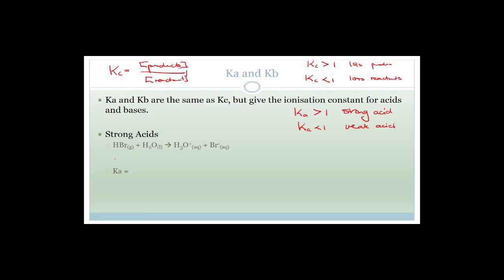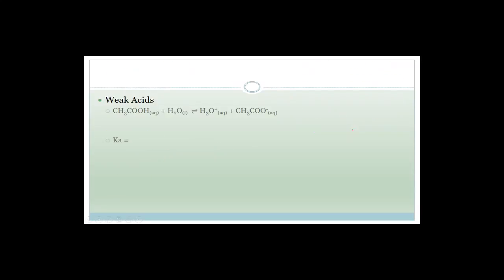For a strong acid like HBr, the Kₐ expression — excluding water as a liquid — is: Kₐ = [H₃O⁺][Br⁻] ÷ [HBr]. If Kₐ is greater than 1, it's a strong acid; if Kₐ is less than 1, it's a weak acid.